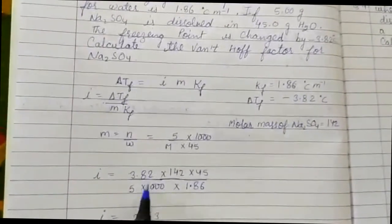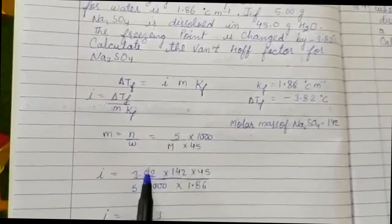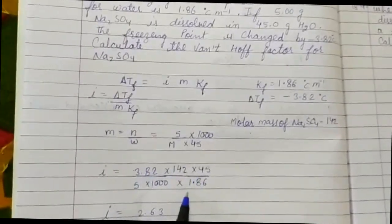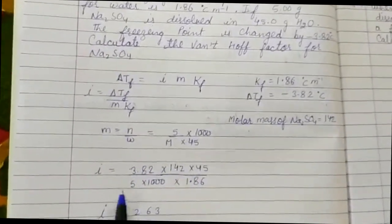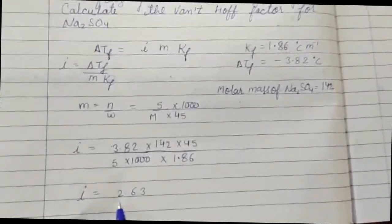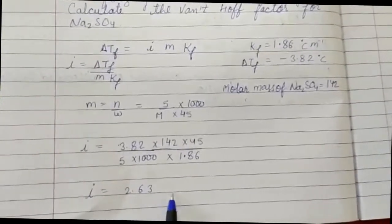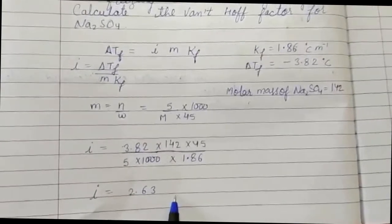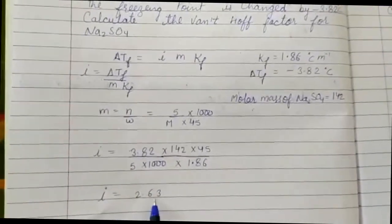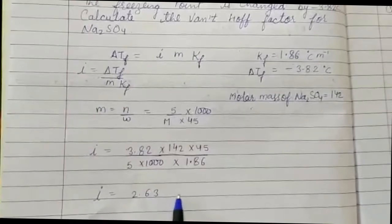By substituting all these values of delta Tf, molality, and Kf, the Van't Hoff factor I comes out to be 2.63. So the Van't Hoff factor for sodium sulfate is 2.63.